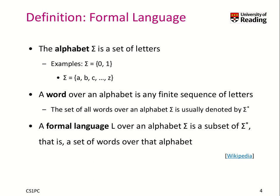First, let's define a formal language. The term 'formal' really means to be very strict in the mathematical sense. We talk about an alphabet sigma, which is a set of letters. For example, sigma can be the set {0, 1}, or sigma can be a up to z in terms of different characters.